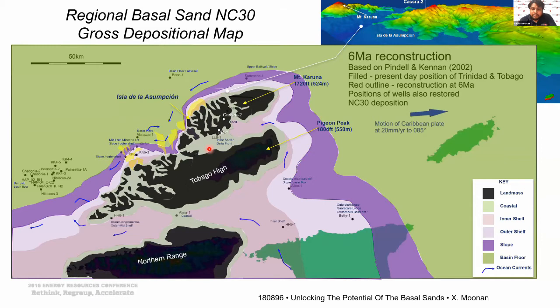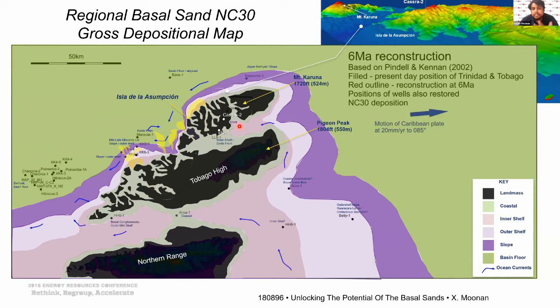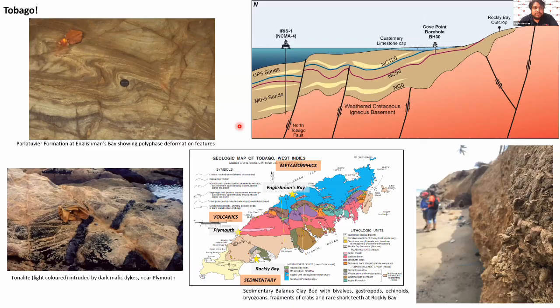Tobago was part of a Cretaceous volcanic arc about 65 million years ago. That arc got broken apart and plastered onto the side of South America — all those islands are now on the northern part of South America, and Tobago was the one that traveled far enough to meet the rest of Trinidad. Six million years ago there was actually another little island next to Tobago which we named Isla de la Sumption, after the name Columbus had intended for Tobago. It shows us that in geological time, places can completely disappear.